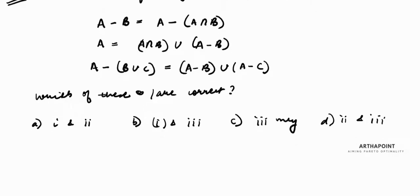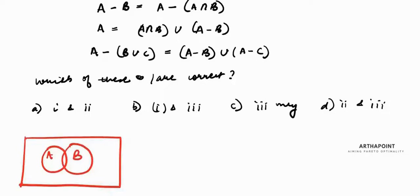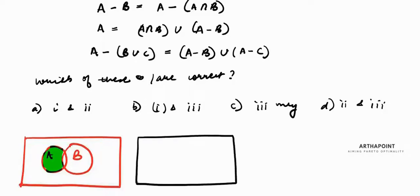Let's examine relation 1. If I draw a Venn diagram with sets A and B, then A - B is A without the B portion. Now A - (A ∩ B): A ∩ B is the overlapping part, and if you subtract that from A, you are left with the same region. So both expressions give the same shaded area — relation 1 is correct.